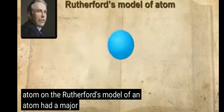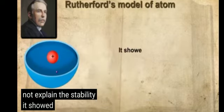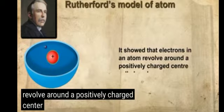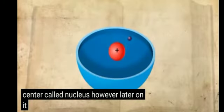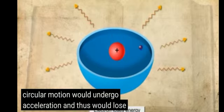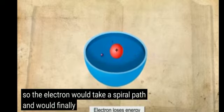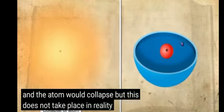Rutherford's model of an atom had a major drawback: it could not explain the stability of an atom. It showed that electrons in an atom revolve around a positively charged center called the nucleus. However, it was later found that any particle in circular motion would undergo acceleration and thus lose energy. So, the electron would take a spiral path and finally fall into the nucleus, and the atom would collapse. But this does not take place in reality.